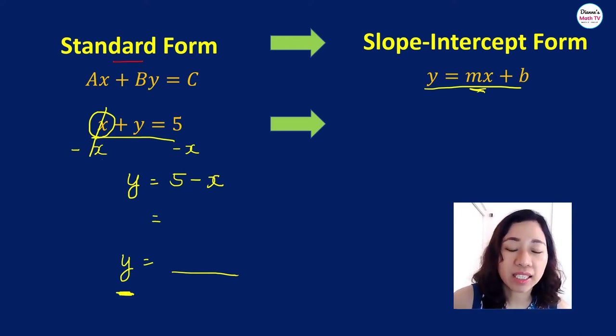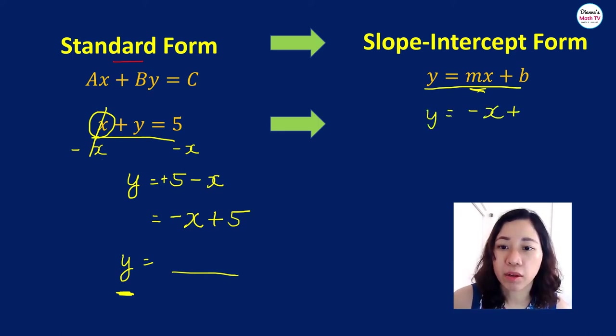5 minus x is just the same as negative x plus 5. We will include the sign, so that's negative x plus 5. This one here, this is negative x. So you include that negative x plus 5. Therefore, that is now your slope intercept form. y is equal to negative x plus 5.